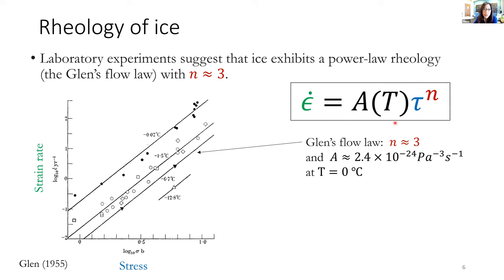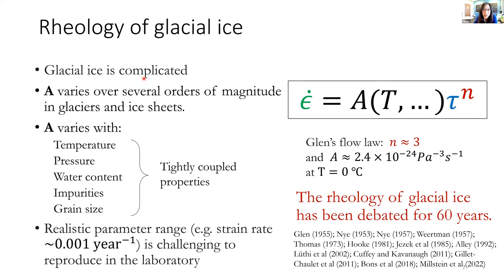Glen's flow law is based on laboratory experiments showing that measured strain rate and stress approximately follow a power law with a fitted exponent of about n = 3. The pre-factor of this relationship depends on temperature. However, the rheology of glacial ice can be much more complicated — the pre-factor can depend on pressure, impurities, and grain size, and these effects can be coupled together. In a realistic parameter range, strain rate can be as small as 10⁻³ per year, a timescale challenging to reproduce in a laboratory. The rheology of glacial ice has been widely debated for over 60 years.